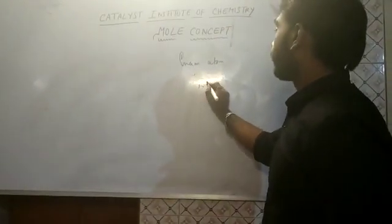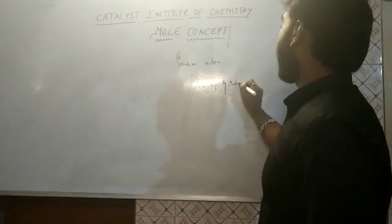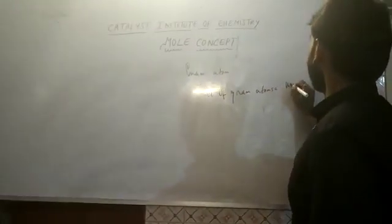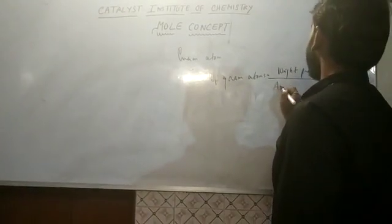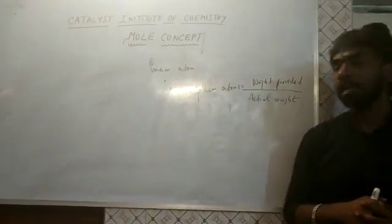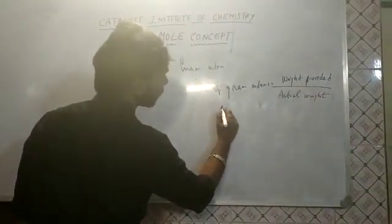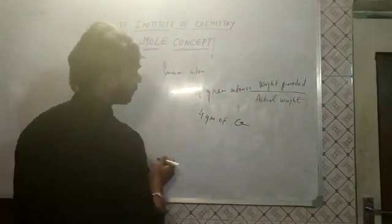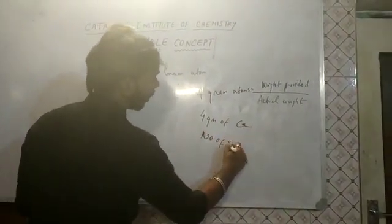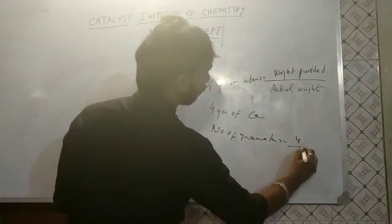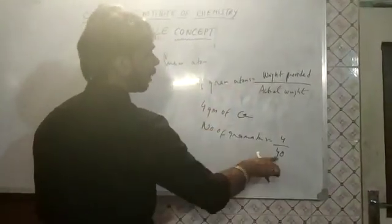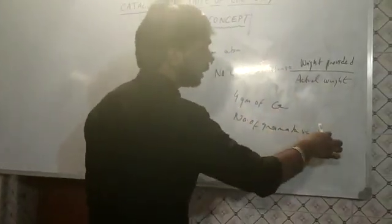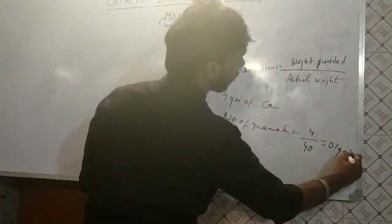For example, if I provide 4 grams of calcium, the number of gram atoms = 4 divided by 40, because the weight provided is 4 grams and the actual atomic weight of calcium is 40. So 4/40 = 0.1 gram atoms.